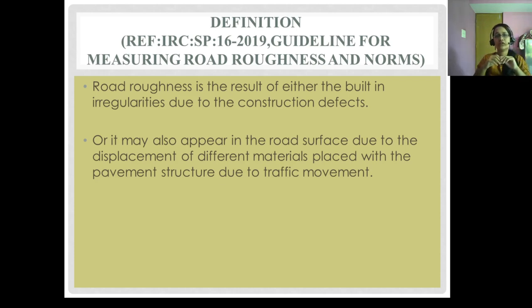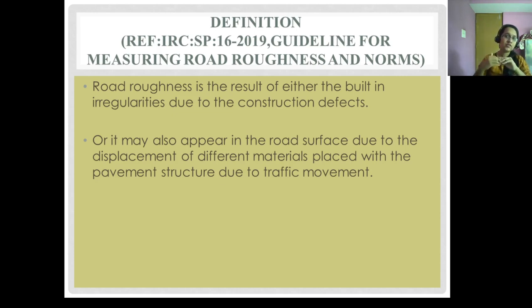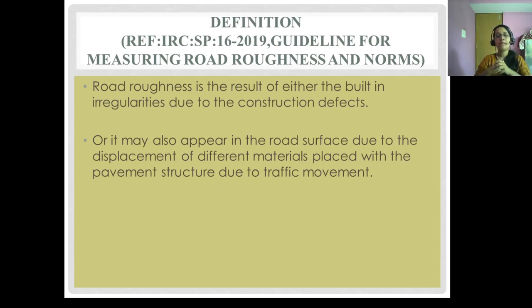According to the IRC guidelines for measuring road roughness and norms, road roughness is a result of either the built-in irregularities due to construction defects, or it may also appear in the road surface due to the displacement of different materials placed within the pavement structure due to traffic movement.